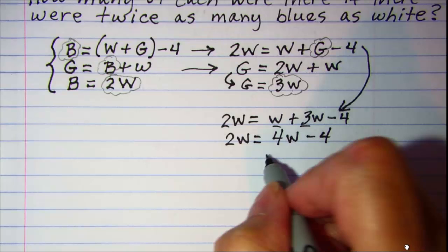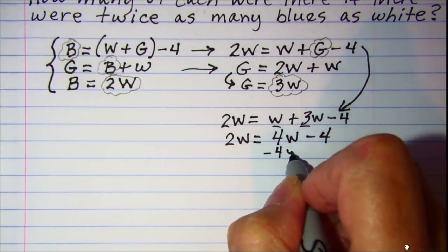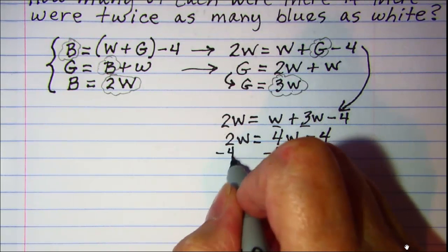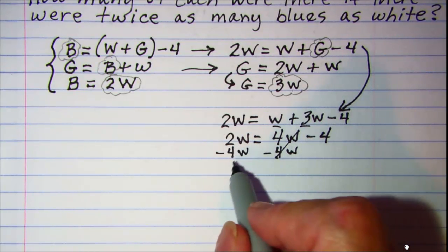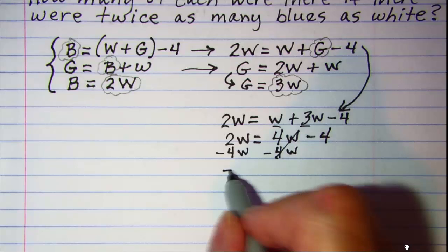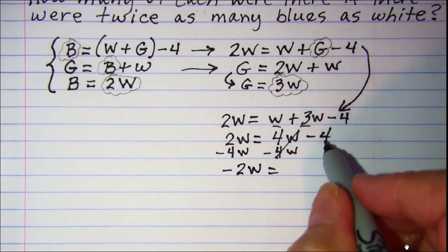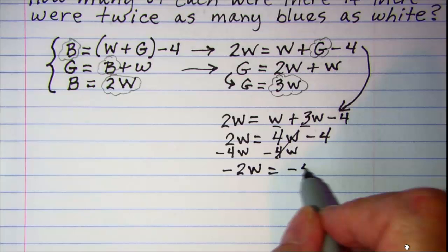Let's subtract 4W from both sides. This will cancel. 2W minus 4W is negative 2W. And then on the right side I just have negative 4.